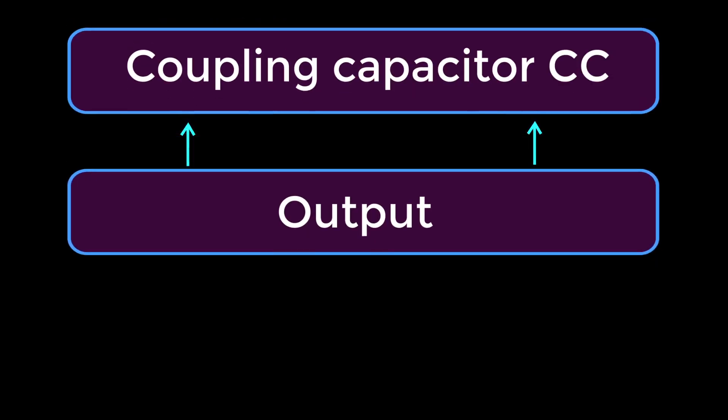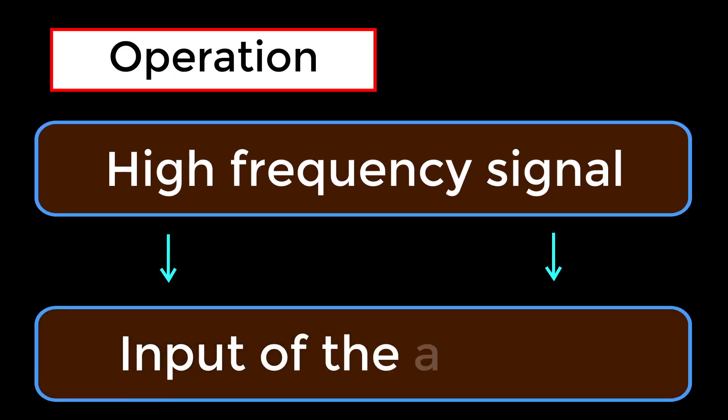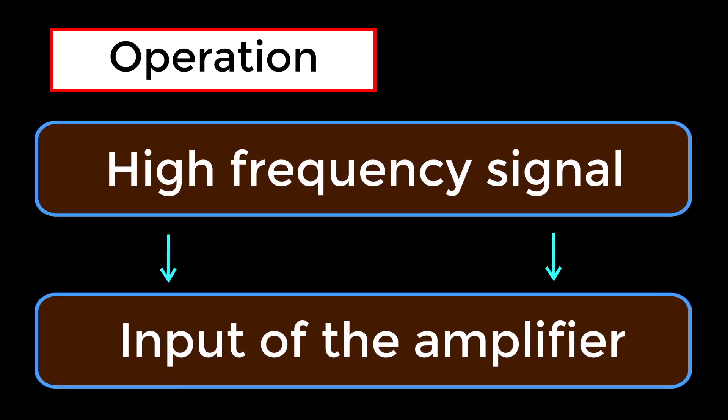The output can be obtained from the coupling capacitor CC or from a secondary winding placed at L. For operation, the high frequency signal that has to be amplified is applied at the input of the amplifier.